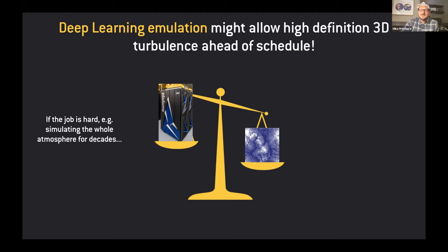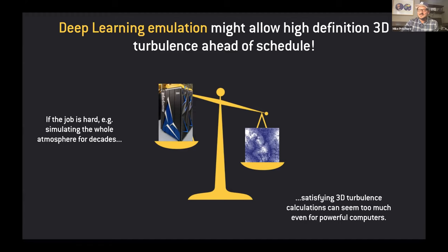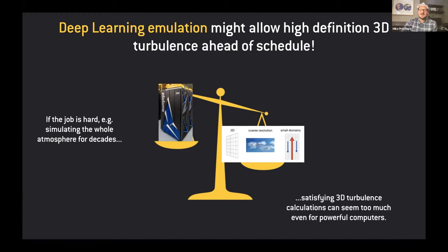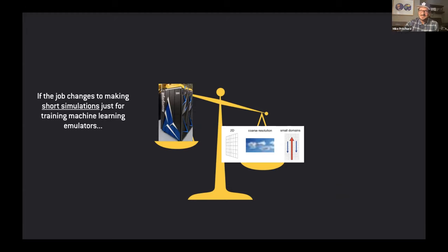This is what really excites me about deep learning emulation — it might allow us to extract information from short simulations of small patches of atmosphere at high fidelity and use it ahead of schedule, rather than waiting two decades for supercomputers to catch up. Traditionally, climate modelers have had to restrict themselves to calculations that can simulate the whole atmosphere for decades. If the job changes in the machine learning era to just making short simulations as a training library for machine learning emulators, then I might be able to do what I'd prefer: large three-dimensional domains with high resolution that resolve boundary layer turbulence.